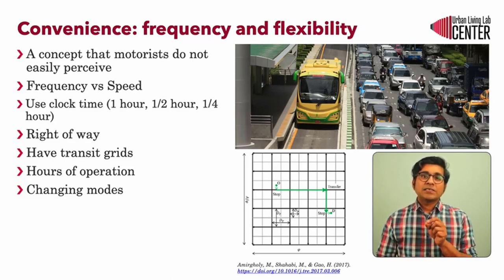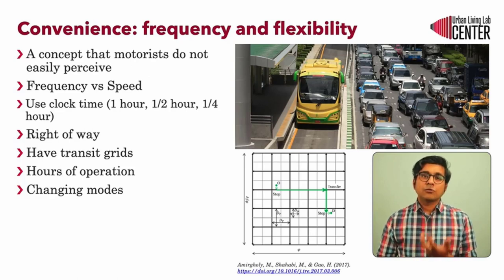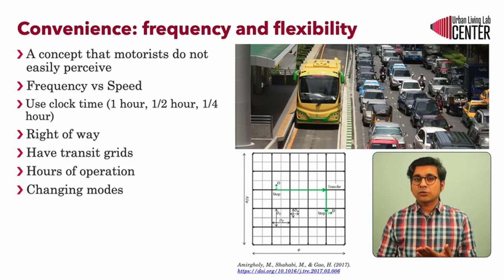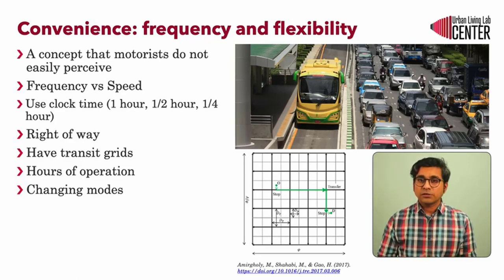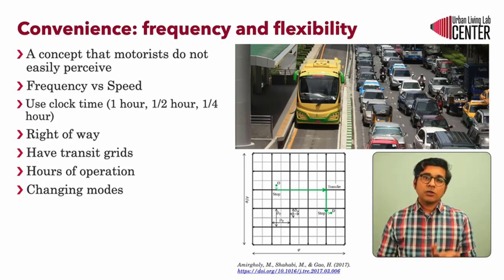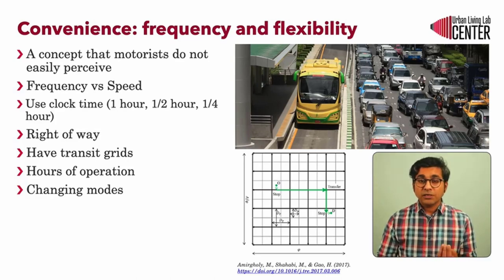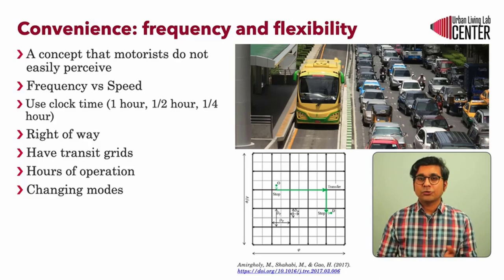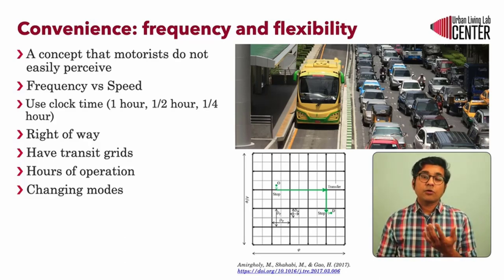Increasing frequency can increase the costs of operation as the number of vehicles needed may increase. For this, there could be better transit service options such as express service, limited stop services, and regular services. When planning timetables, it is better to plan using clock times — for example, every 15 minutes or every 30 minutes — and this makes it easier for users to plan their journeys.